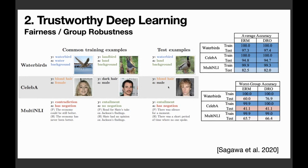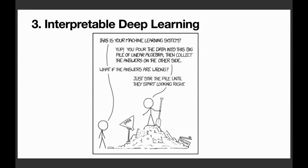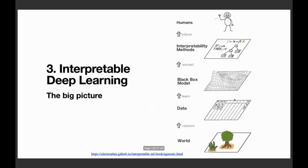The third topic is on interpretable deep learning, which is really fun because you get to see a lot of cool visualizations. I wanted to use this XKCD comic here. This guy is asking, is this your machine learning system? And the guy answered, yep, you pour the data into this big pile of linear algebra and then collect the answers on the other side. And then this person asked, what if the answers are wrong? And the guy responded, just stir the pile until it starts looking right. Obviously this is not the true reflection of the scientific process.